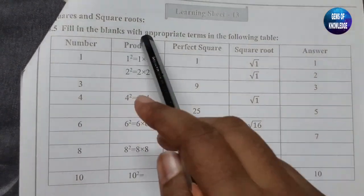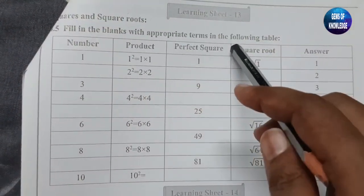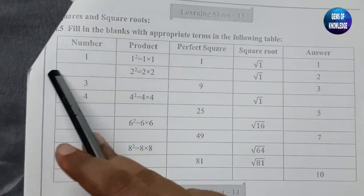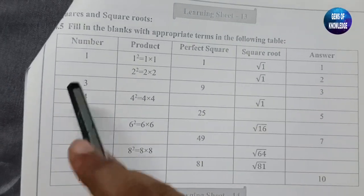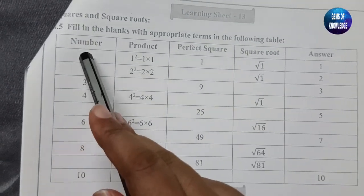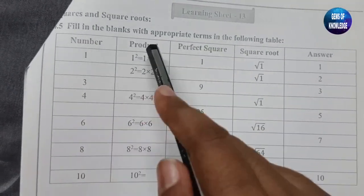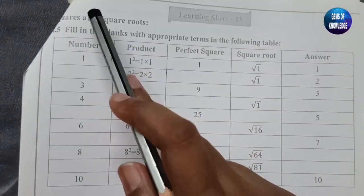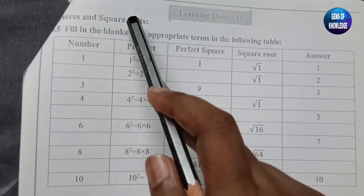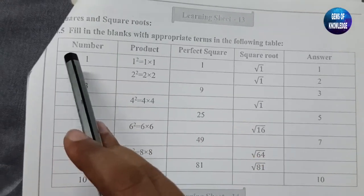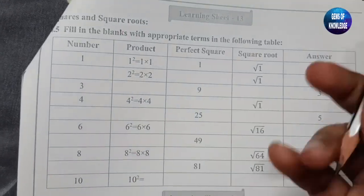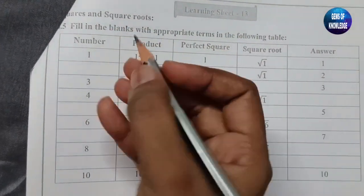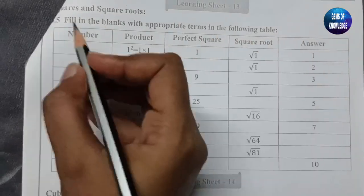Here they have given: fill in the blanks with appropriate terms in the following table. You have to fill this table. A number is given along with its product. Since we are learning squares and square roots, we have to fill in numbers from 1 to 10.